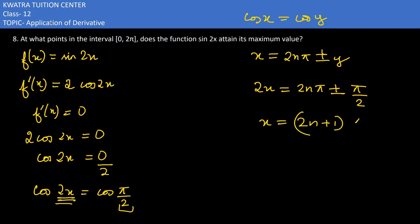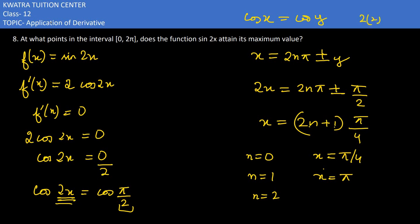Applying the general solution here, 2x = 2nπ ± π/2, so x = nπ ± π/4. We check different values of n. For n = 0: x = π/4. For n = 1: x = π + π/4 = 5π/4, or x = π − π/4 = 3π/4.